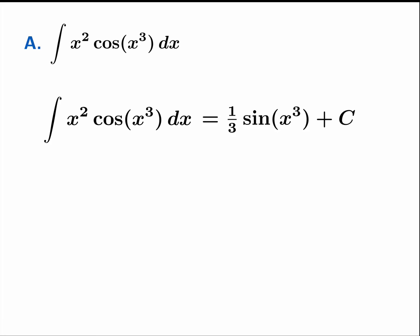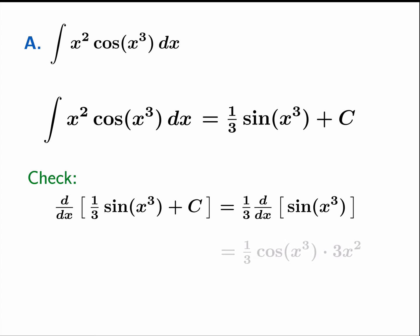Now, antiderivatives are very easy to check. After all, you just take the derivative. Are you going to get the right thing back? So if we take the derivative of one-third sine of x cubed plus c, first of all, the derivative of a constant is zero and the scalar slides out. So it's the same as this derivative. The derivative of sine of x cubed is cosine of x cubed times 3x squared. So there you see the chain rule play out. And a little bit of simple algebra allows us to see that we get x squared cosine of x cubed. And that is indeed what we were looking for. So we have found the antiderivative or the indefinite integral of x squared cosine of x cubed.